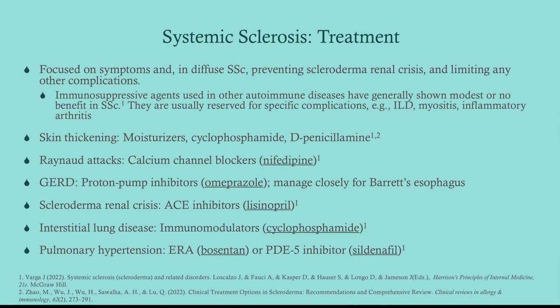Treatment is symptomatic — there's nothing to slow this down or stop it, and immunosuppressants don't work that well. For skin thickening, use moisturizers; in severe cases give cyclophosphamide or D-penicillamine. For Raynaud's attacks, go with calcium channel blockers, just like any other vasospastic issue. For reflux, treat as usual with omeprazole or proton pump inhibitors. For interstitial lung disease, cyclophosphamide is the only thing that will slow it down. For pulmonary hypertension, use endothelin receptor antagonists like bosentan or PDE5 inhibitors like sildenafil.